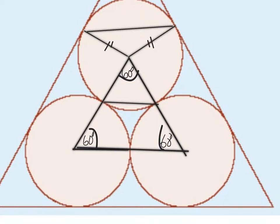I can make another equilateral triangle here. By similar triangles, this angle would be 60 degrees and this angle would be 60 degrees. This angle is built on an arc, and by Theorem 6 — angles on the same arc — this angle here is double, so it's 120 degrees. That means the remaining angles are each 30 degrees.